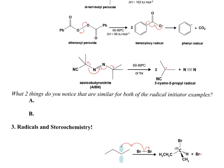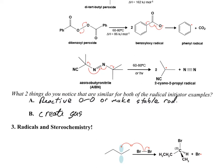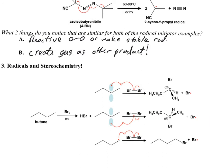What are two things that are similar for both of these radical reactions? You have a reactive O-O bond, or you make a stable radical. And the other thing - you might create a gas, and that helps drive the production of the radical by Le Chatelier's principle, pushing the starting material towards becoming a radical. So we covered radical stability, just like carbocations, and these initiators - what they have in common: they form stable radicals from reactive starting materials, and maybe they create a gas to drive the formation.